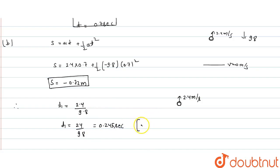Therefore t1 we calculate 24 upon 98 equals 0.245 seconds. This is the time when velocity of bolt becomes 0.